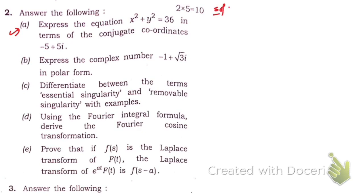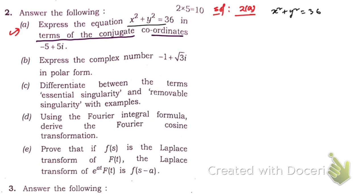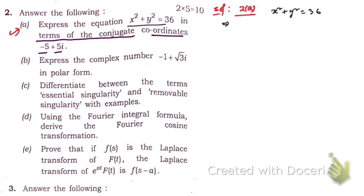Let's solve question number 2a. The equation given is x² + y² = 36. You are asked to express it in terms of conjugate coordinates of (-5, 5). This equation is nothing but a circle whose center is at the origin with radius 6 units, since 36 = 6². We can write it as (x−0)² + (y−0)² = 6².